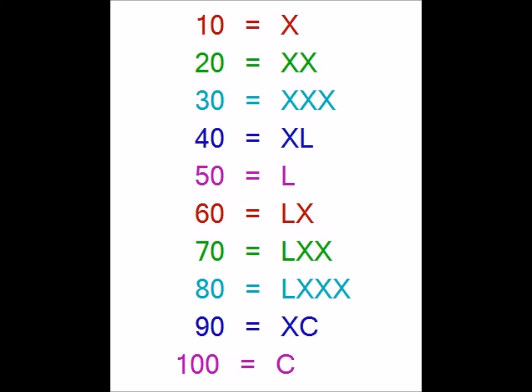These are the numbers indicating 10 to 100. For the rest of the numbers we use the numbers 1 to 9, that means we just need to append the numbers 1 to 9 with the numbers we just learned. For constructing 11 we just need to append 1 to 10, that means XI indicates 11.